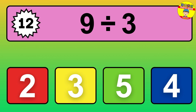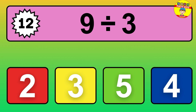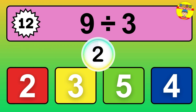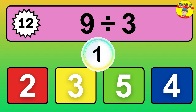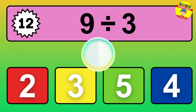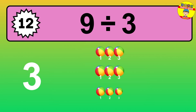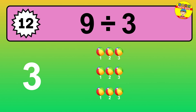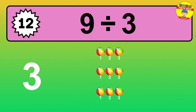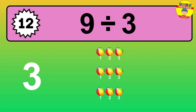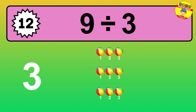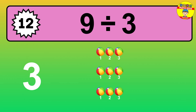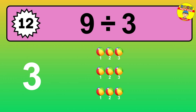What is 9 divided by 3? Picture this: you have 9 objects to divide into groups of 3. How many groups can you make? Let's think about it. Ready to find out? Let's break it down. Let's imagine you have 9 objects. Can you picture them lined up? Now, think about splitting them equally into 3 groups.